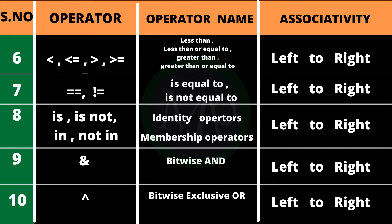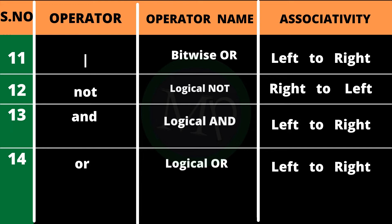The next highest priority is equal to and not equal to. After that, the bitwise AND operator — if you have more than one, evaluation goes left to right. Then bitwise exclusive OR — also left to right. Then the bitwise OR operator — also evaluated left to right.